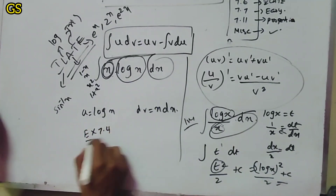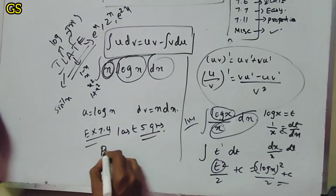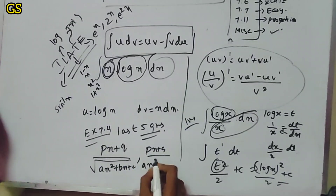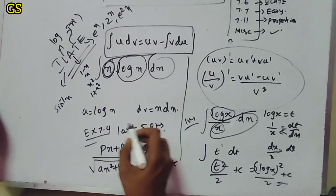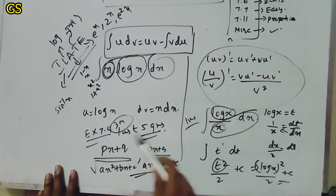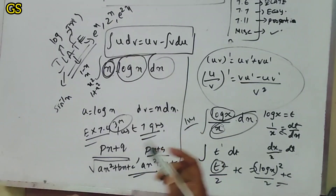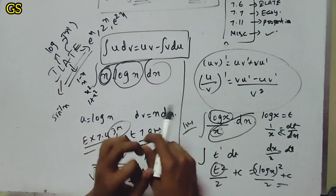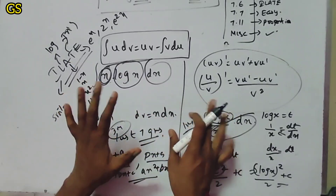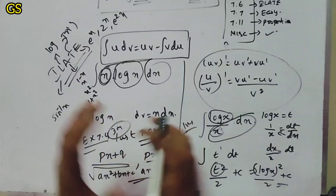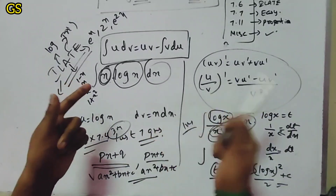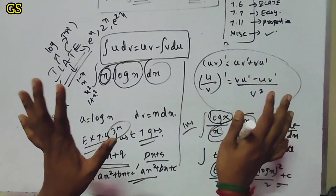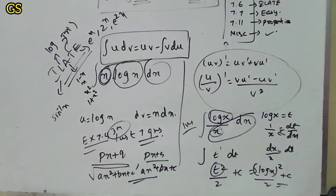Exercise number 7.4 — the last five questions — we expect three marks in the formula: (px plus q) over root of (ax squared plus bx plus c), and (px plus q) over (ax squared plus bx plus c). Integration is the maximum. I will do that — you can watch the channel videos. Practice the integration. Next video — thank you, bye.